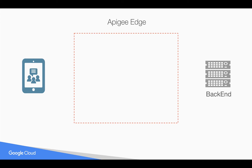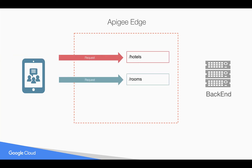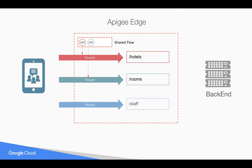Let's understand why we need something like shared flows and flow hooks in Apigee Edge. Let's say you have a couple of API proxies and you have created a shared flow that you are executing in these API proxies. In the future, somebody is going to create one more API proxy, and you want to make sure that the same shared flow will execute even for the new API proxy.